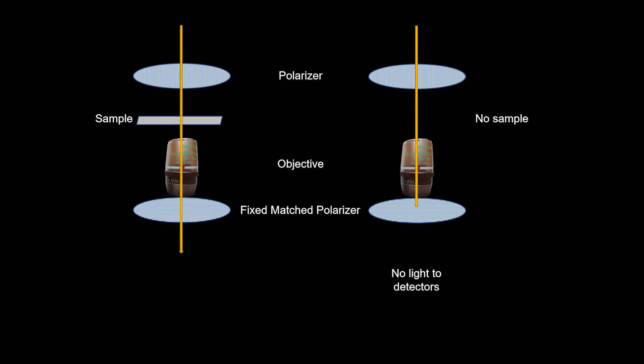Then when you put your sample in the light path, it will shear the light and because of this mismatch, some of the light will leak through to the detector to produce contrast.